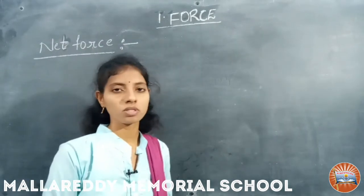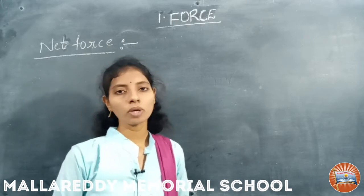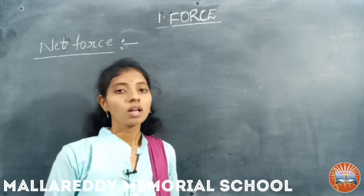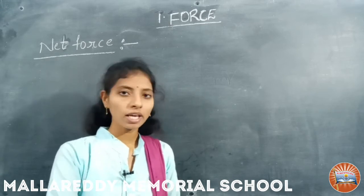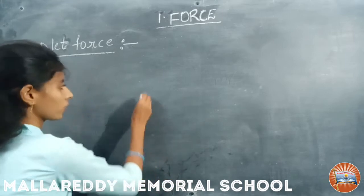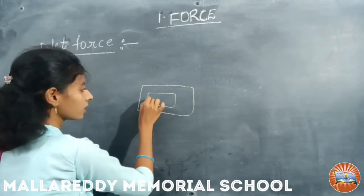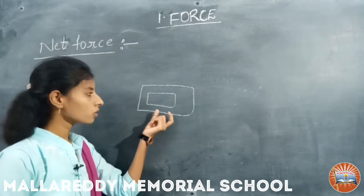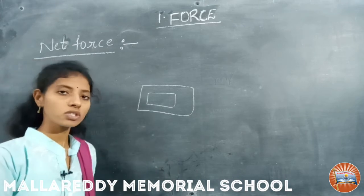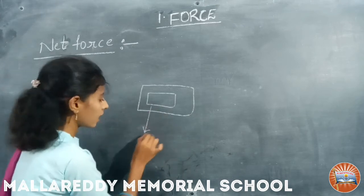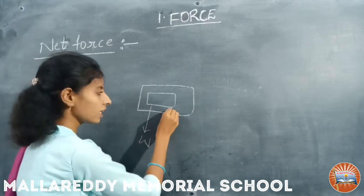The next one: net force. Many forces can act simultaneously on a body. For example, two forces act on a body when it is placed on a horizontal floor. If you have taken one object on a horizontal floor, two forces will act on it — one is gravitational force vertically down and one is normal force vertically up.